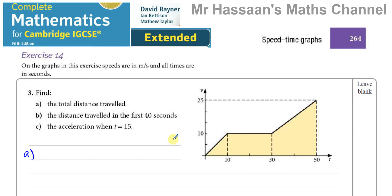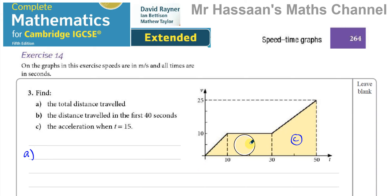For part a, we need to find the total distance traveled. On a speed-time graph, the total distance traveled is given by the area under the graph. We have three separate areas: a triangle, a rectangle, and a trapezium. However, I prefer to take the triangle and rectangle together as one trapezium — it's simpler to work with.